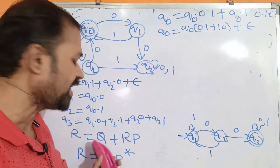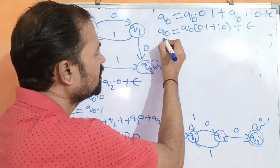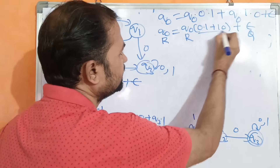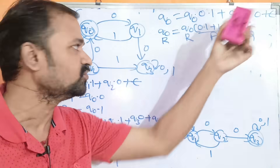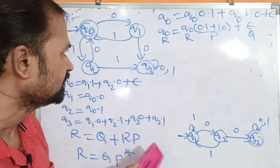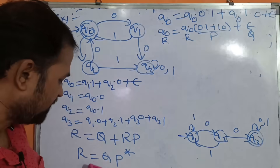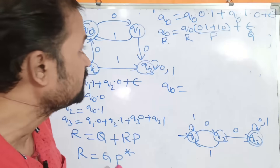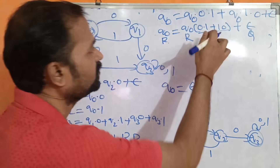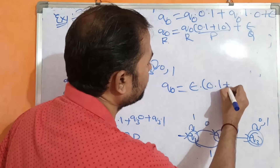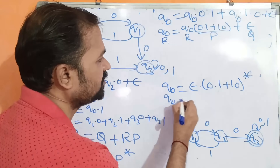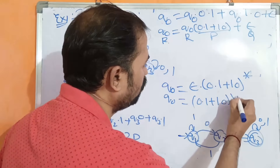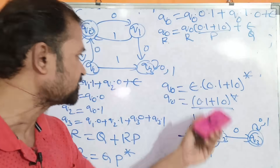Applying Arden's theorem R = Q·P*: Q0 = ε·(01 + 10)*. Since epsilon into R* is just R*, the result is Q0 = (01 + 10)*. This is the regular expression for this finite automata. There is no need to solve Q3, because Q0 can be solved entirely using Q1 and Q2, both of which depend only on Q0.